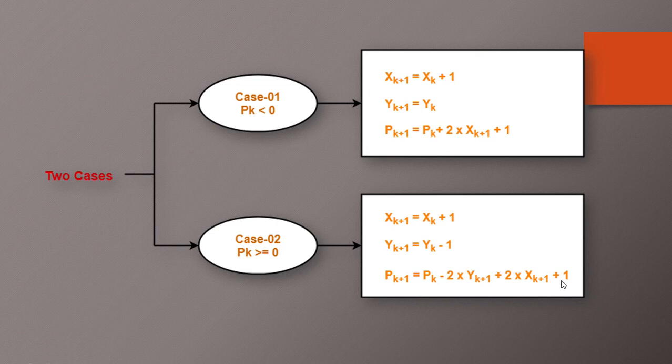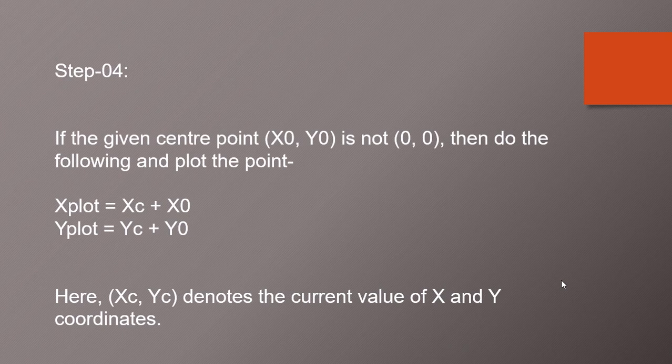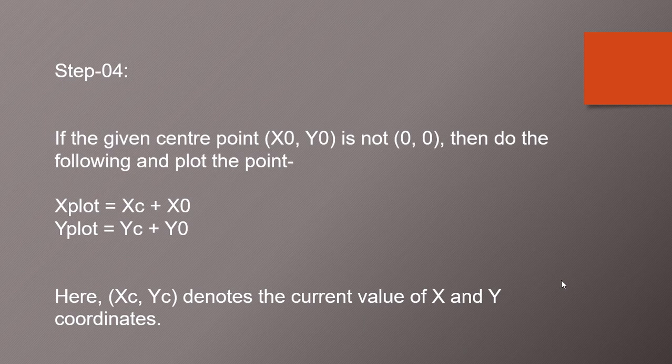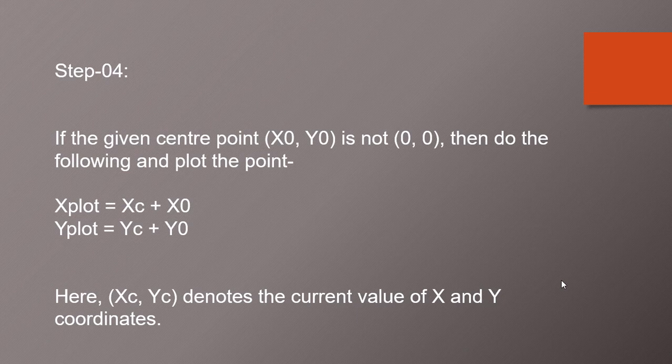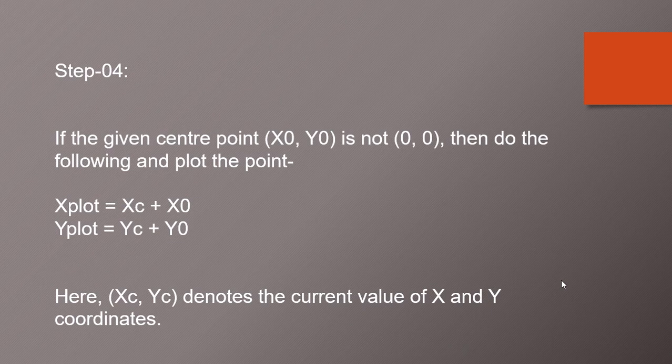So these are the two cases. Now the step 4. If the given center X0 Y0 is not 0 0 then do the following and plot the points. We need to do X plot is equal to XC plus X0 and Y plot is equal to YC plus Y0. Here XC and YC denotes the current value of X and Y coordinates.